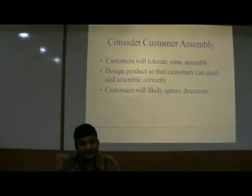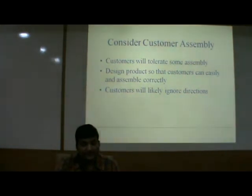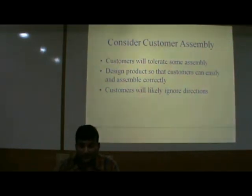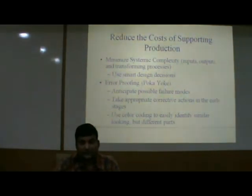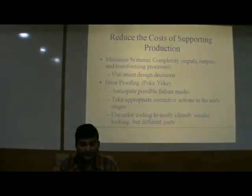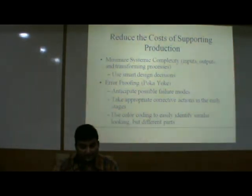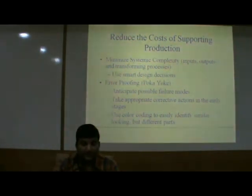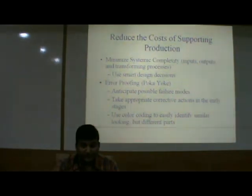Consider customer assembly: customers will tolerate some assemblies. Design the product so that customers can easily and correctly assemble it, noting that customers will likely ignore directions. To reduce the cost of supporting production: minimize systematic complexity including imports, outputs and transforming processes; use smart design decisions; use error proofing; anticipate possible failure modes; take appropriate corrective action in early stages; and use color coding to easily identify similar-looking but different parts.